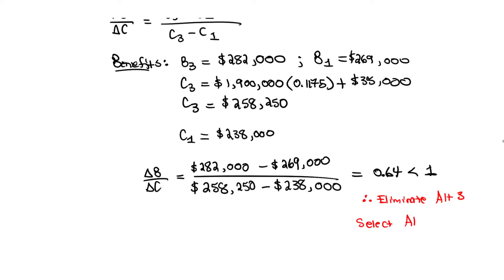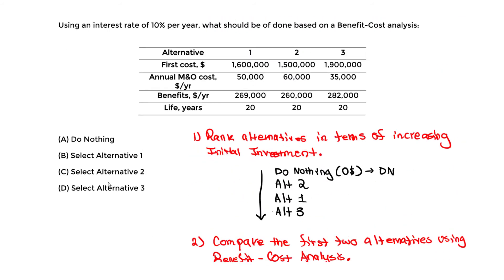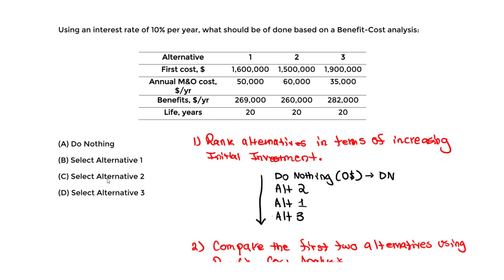We've now compared all alternatives. The final answer is Alternative 1 — we select Alternative 1 based on this benefit-cost analysis. The answer is B.